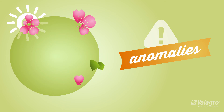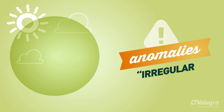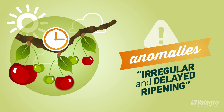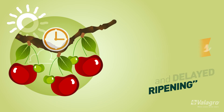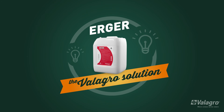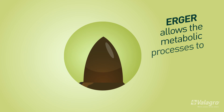Further anomalies include irregular and delayed flowering, and irregular and delayed ripening. For all these anomalies, Erger is the Valagro solution.